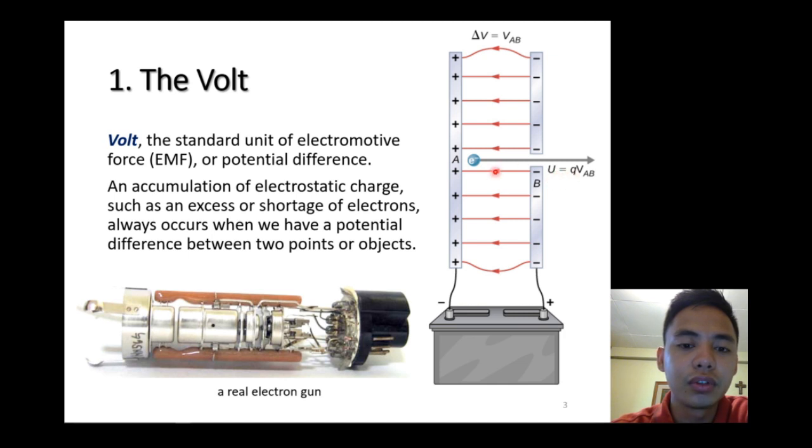The energy is equal to the charge q, which is one electron, multiplied by the voltage between point A and point B, or conductor A and conductor B.